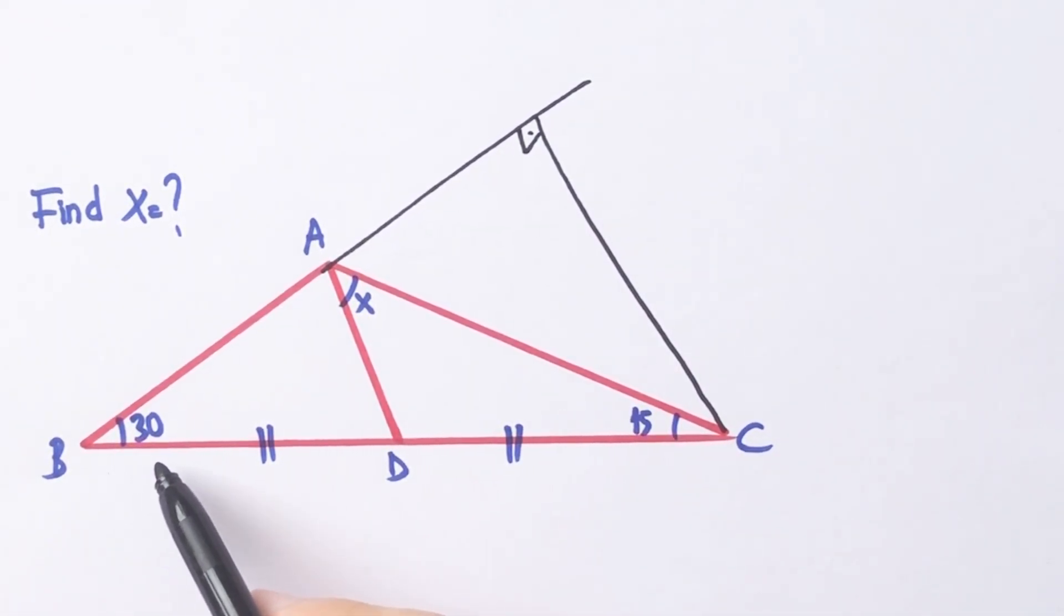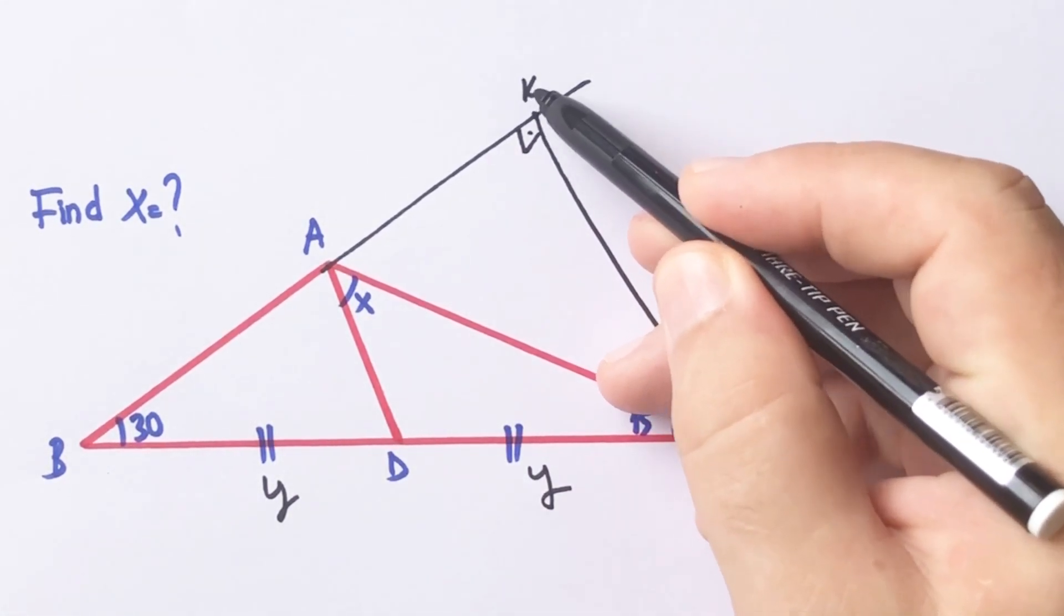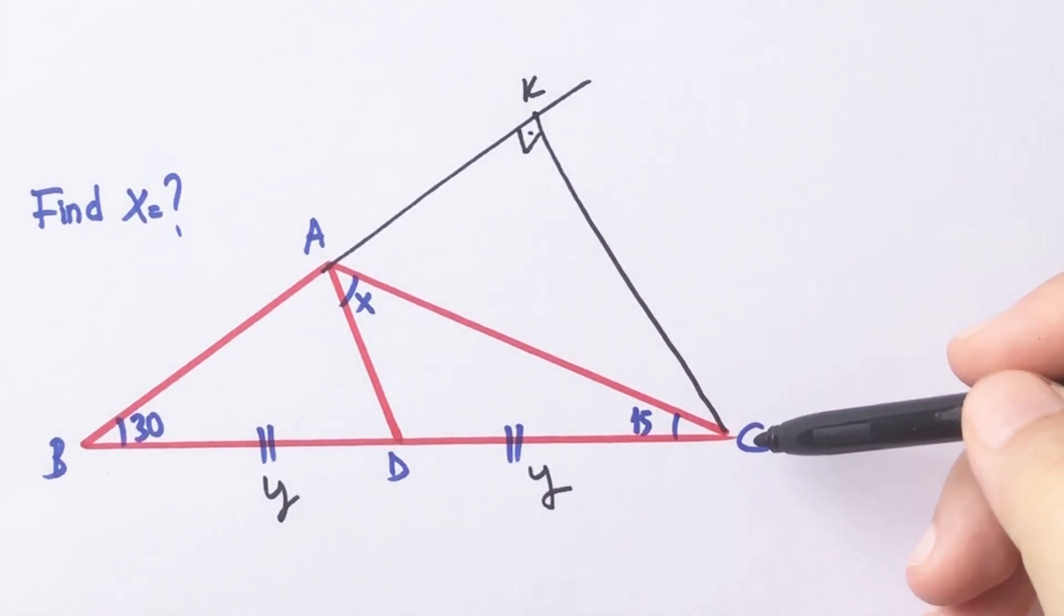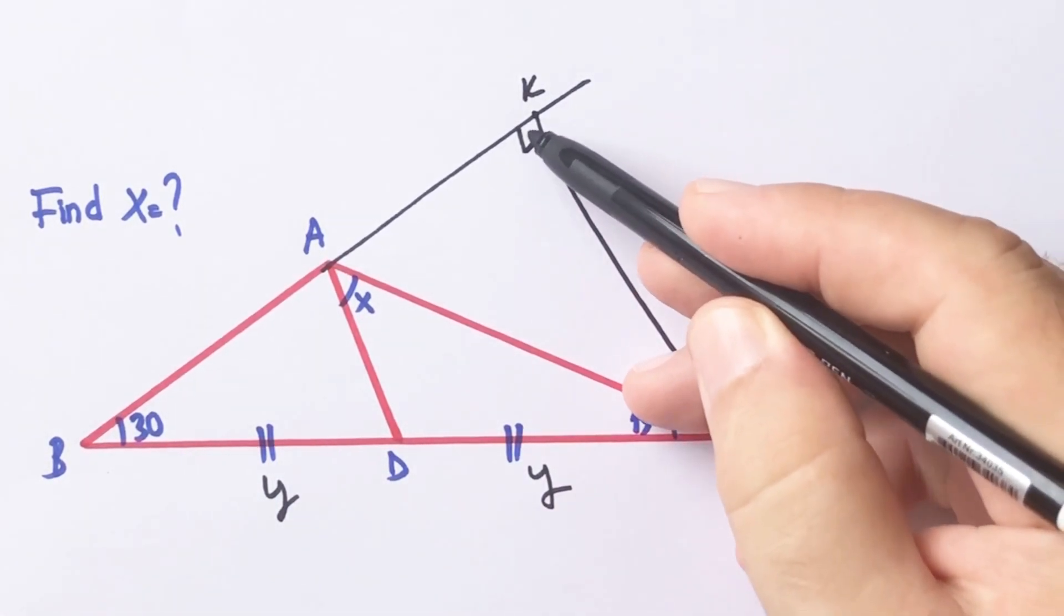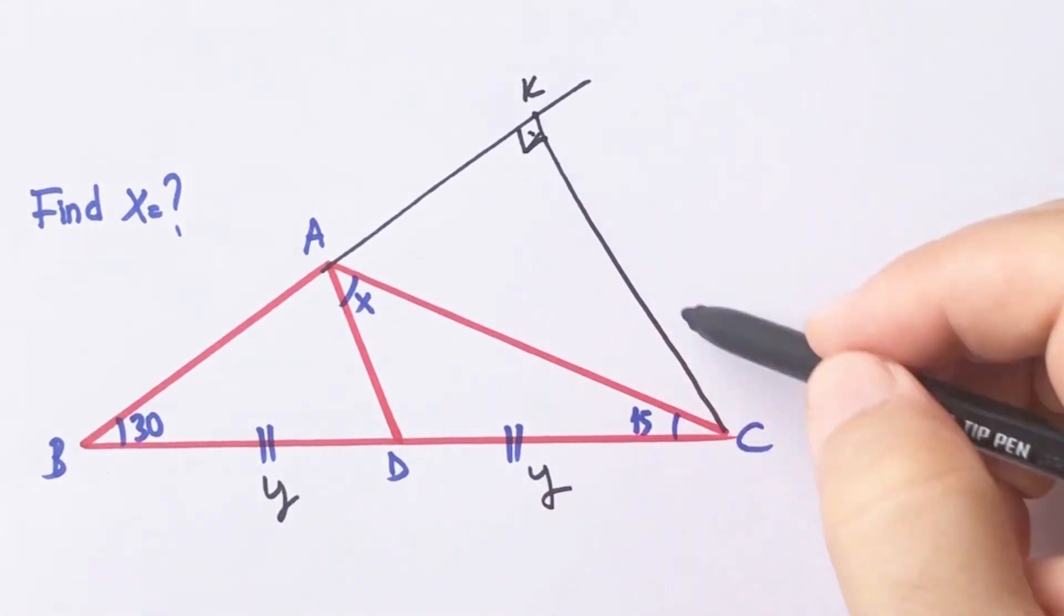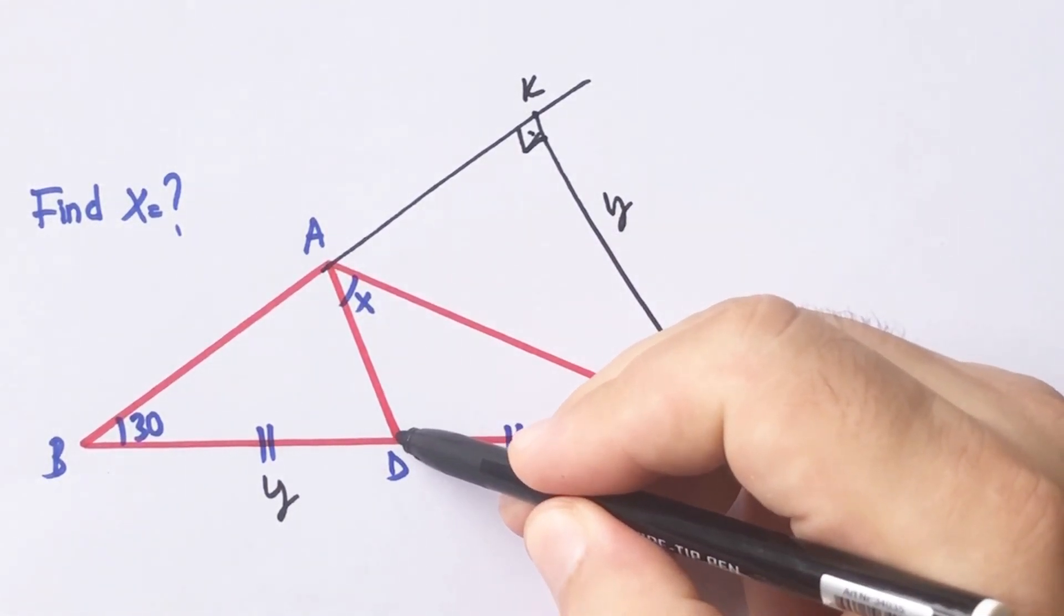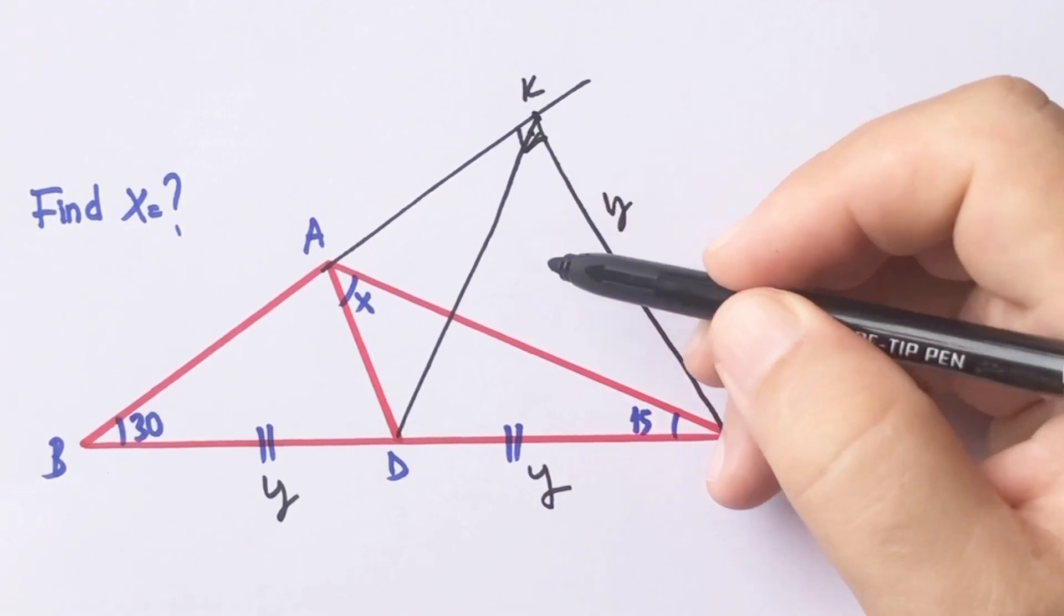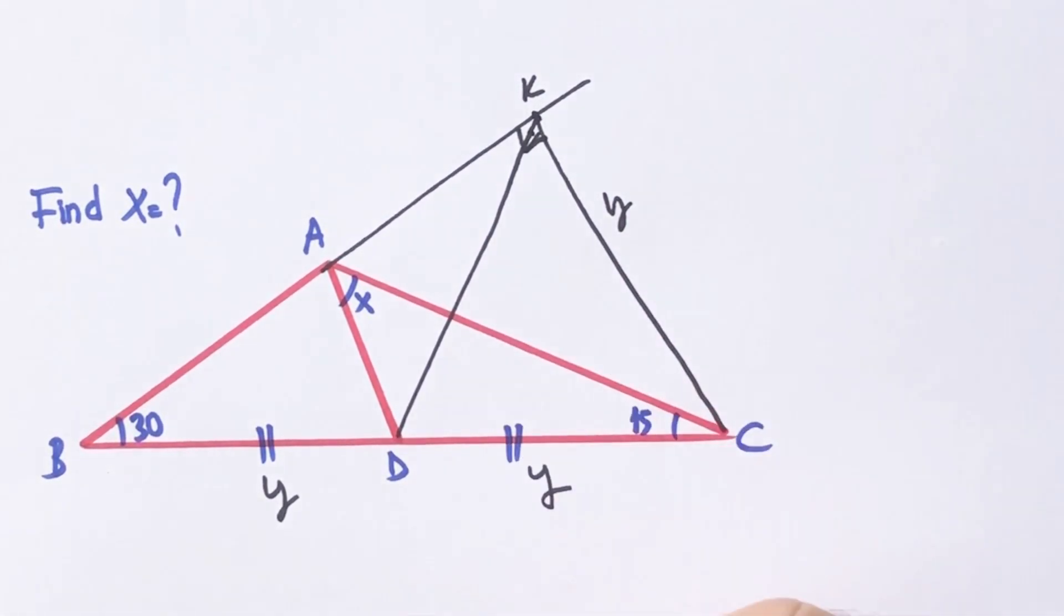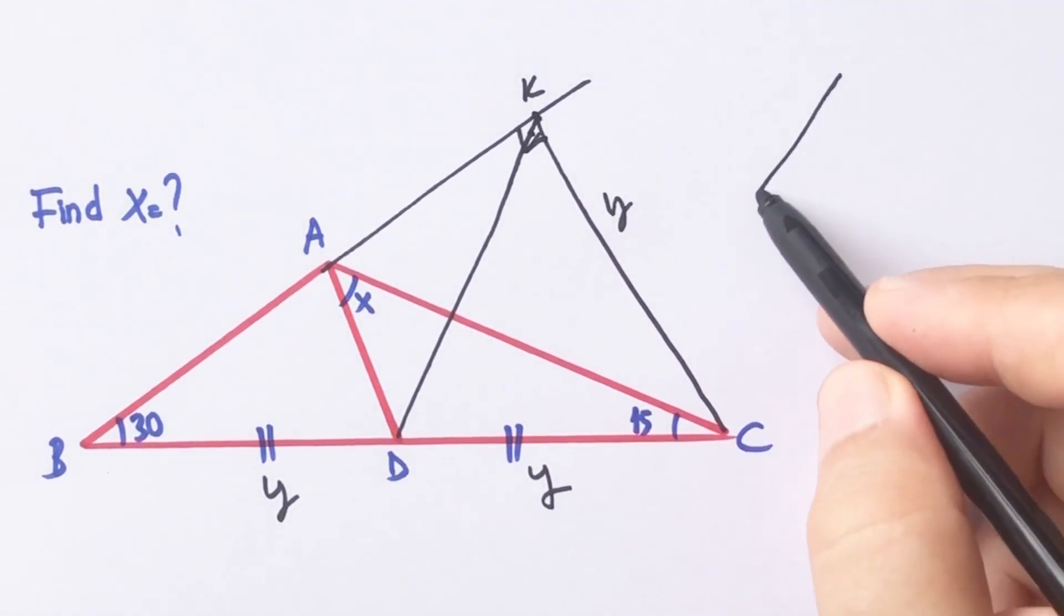Let's call these equal parts y unit and I'm going to call this point k. If there's a 2y across to 90 degrees, x across to 30 degrees must be y unit. If we connect d and k point like this, this part is also y unit.